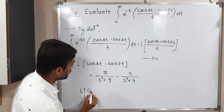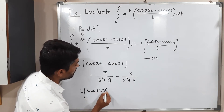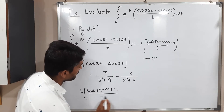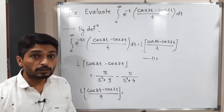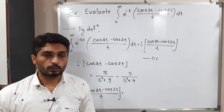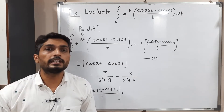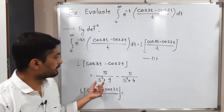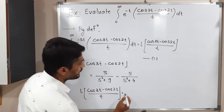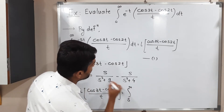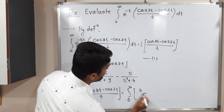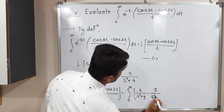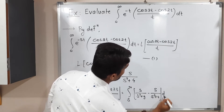For the Laplace transform of (cos 3t minus cos 2t) divided by t, we apply the effect of division by t: we take an integration with limits s to infinity of the previous Laplace result. So we get the integral from s to infinity of [s/(s² + 9) minus s/(s² + 4)] ds.